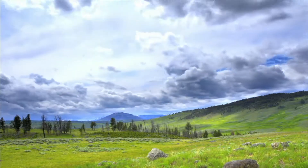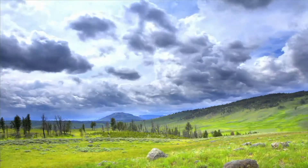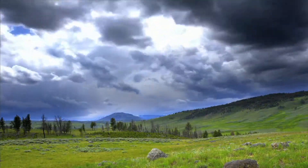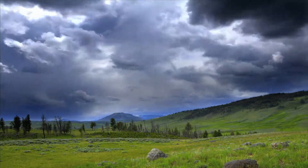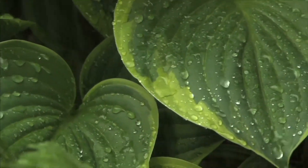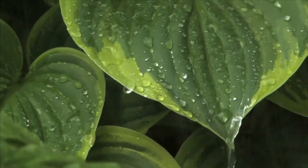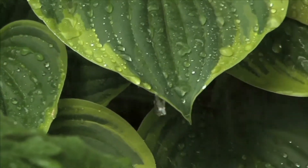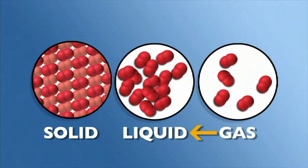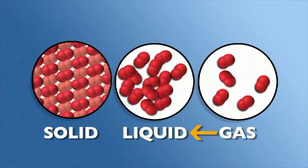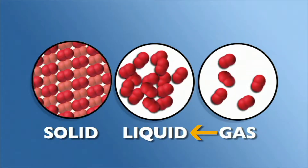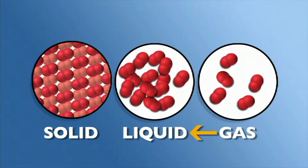When it rains outside, it is a result of water vapor condensing in clouds and falling back to the earth as precipitation. When temperature decreases, a gas like water vapor condenses and becomes a liquid.